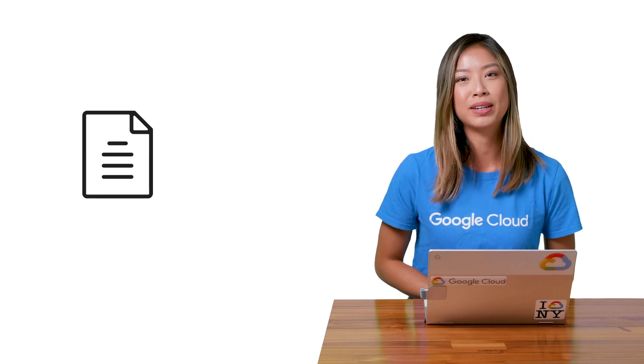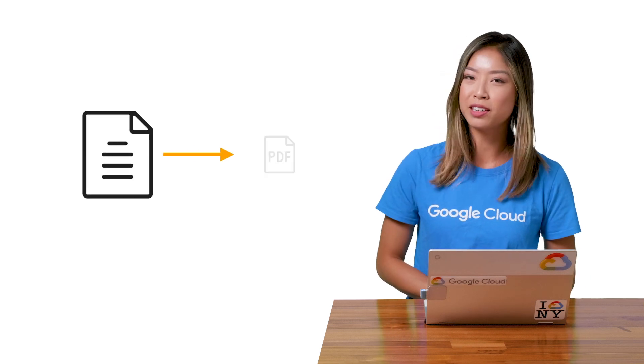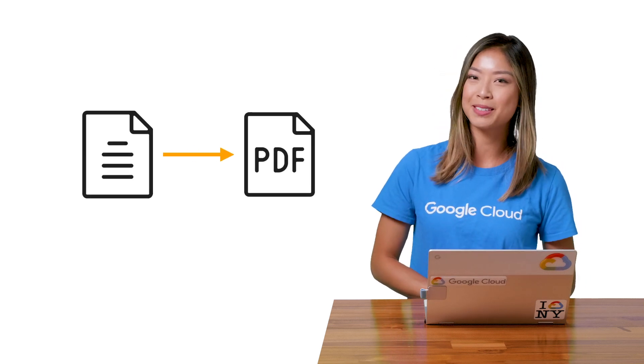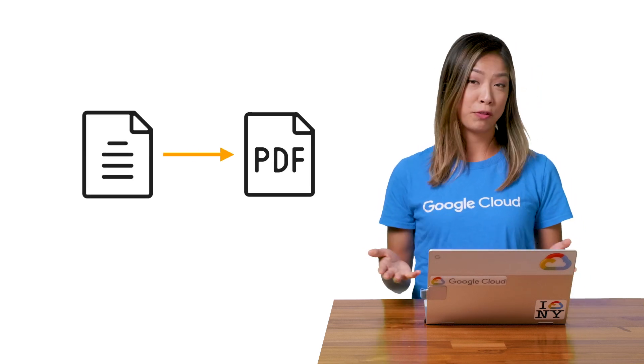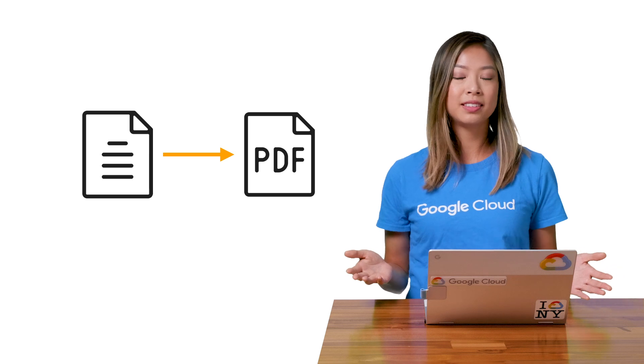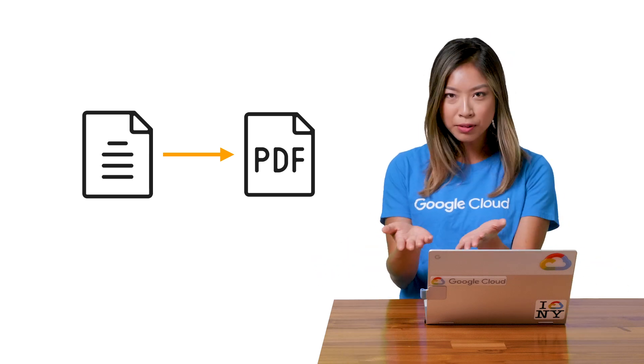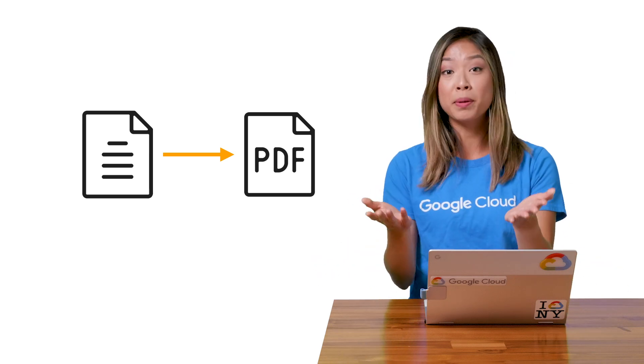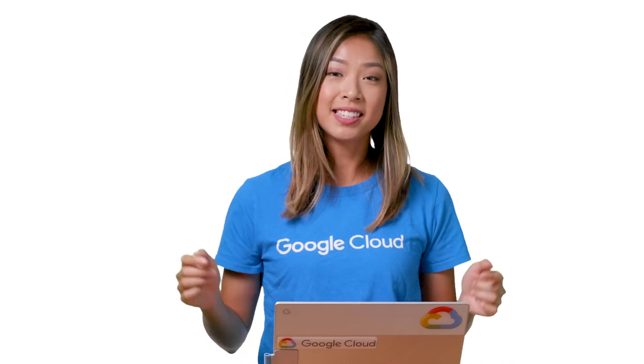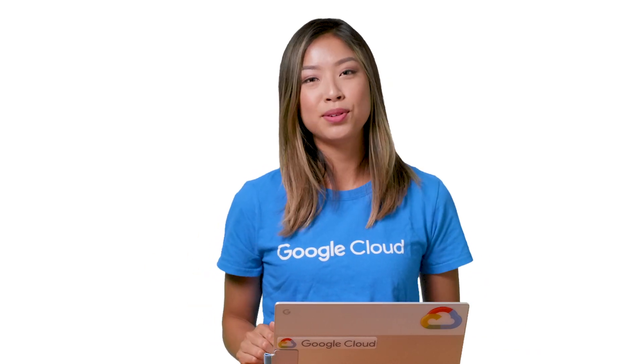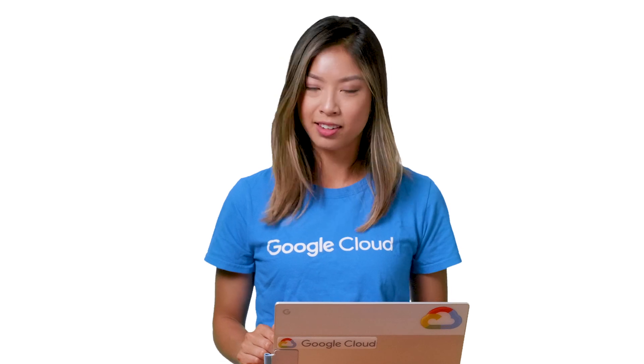To demo this, I'm going to deploy a serverless microservice that transforms Word documents to PDFs. To perform this transformation — does anyone remember OpenOffice? — I'm going to simply add OpenOffice inside my container and then run it in a serverless environment. Let's see how easy it is to run it in a container on Cloud Run.